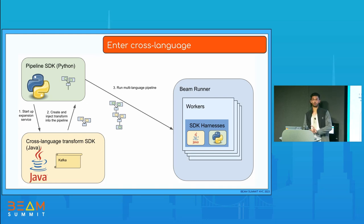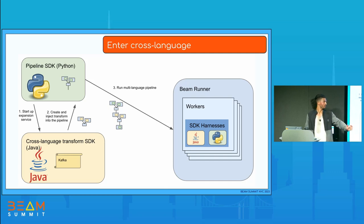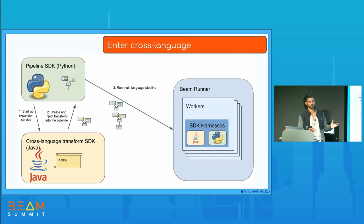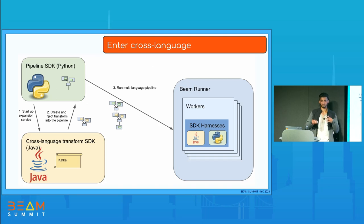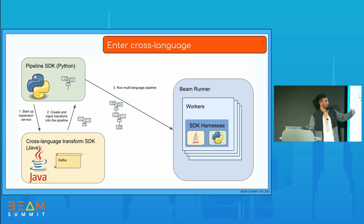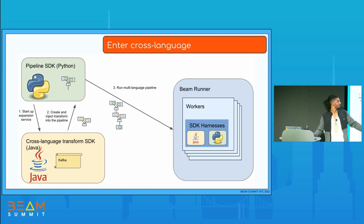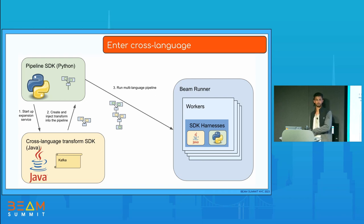If you want to learn more deeply about cross-language and the expansion service, I suggest looking at Chaim's talk. But briefly, the Beam model has abstractions for both P collections and P transforms, so in a single pipeline you can have P transforms from different SDKs. The way we do this is we start up an expansion service, and from a pipeline we just fetch a transform and put it into our pipeline and it just runs. That's actually how our Kafka IO transform in Python works — we just use Java's connector under the covers.